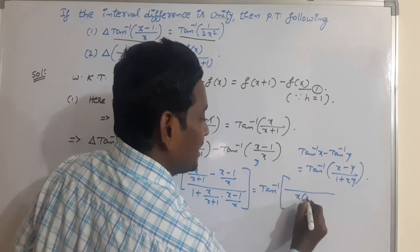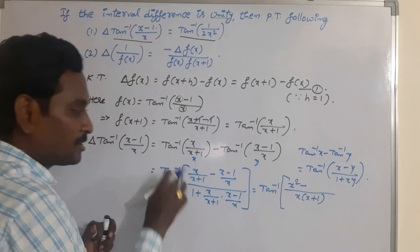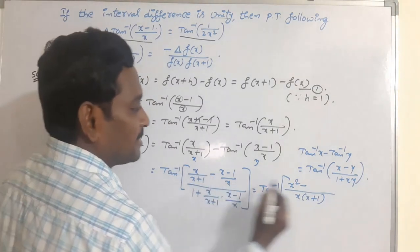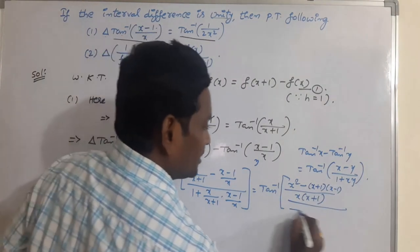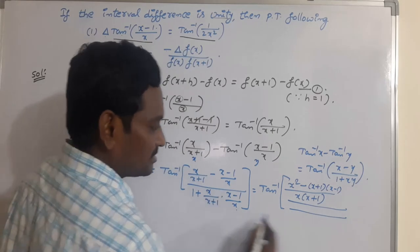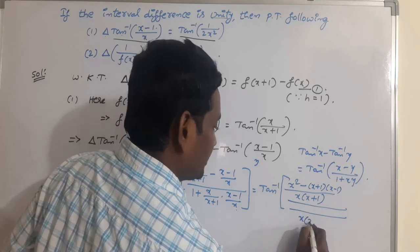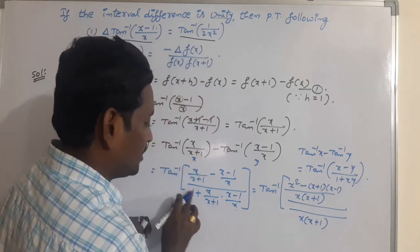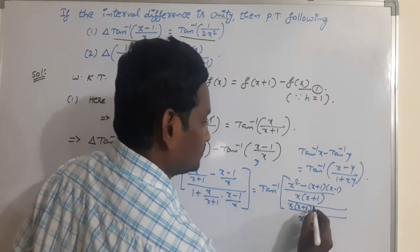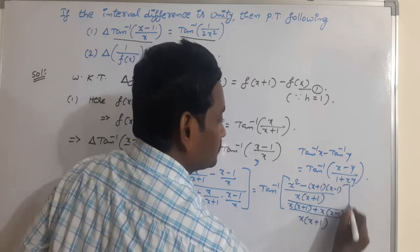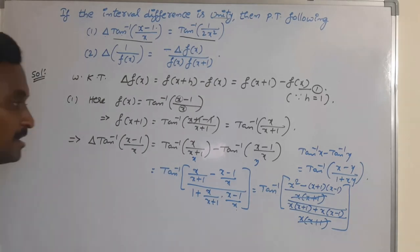The LCM is x times (x+1). In the numerator, using cross multiplication: x times x minus (x+1) times (x-1). In the denominator, we also take the LCM x(x+1), and the x(x+1) terms cancel. Simplify the numerator and denominator to get the result.